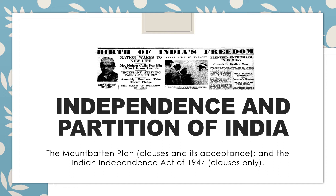Hello, children of Standard 10. Today we are going to take the topic in Indian history: Independence and Partition of India. India was divided once upon a time — under British rule it was a large area comprising India, Pakistan and Bangladesh. When the British left India, they partitioned India into two countries: India and Pakistan. We have to learn the Mountbatten Plan clauses, its acceptance, and the Indian Independence Act of 1947 clauses.